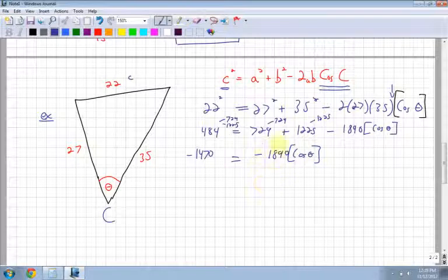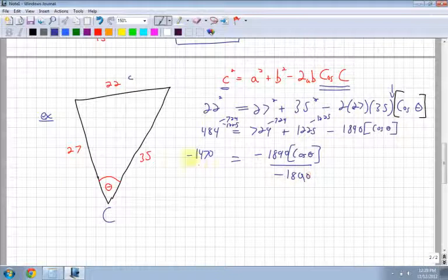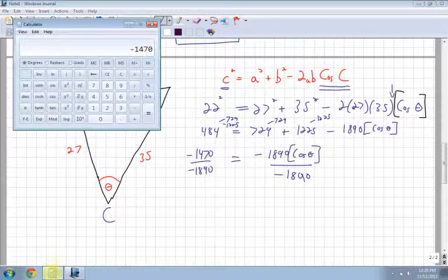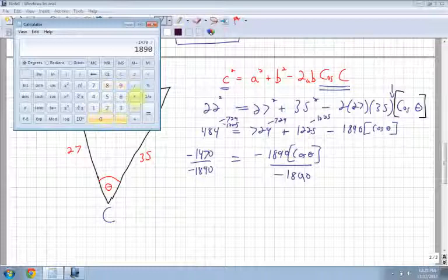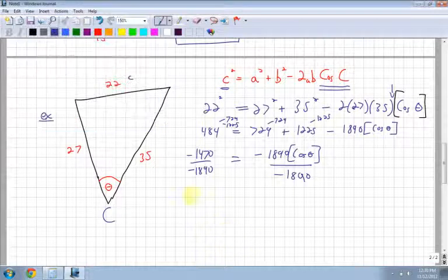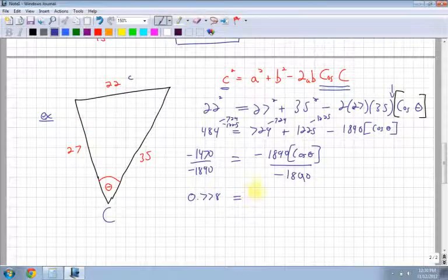Because I want you to know, how do I get rid of the negative 1890? Do I add it, subtract it? No, the opposite of multiplication is division. So I have to divide by negative 1890 on both sides. So I have negative 1470 divided by 1890, which is equal to 0.7777. Now I'm going to round on paper but remember I'm not going to round on my calculator, I'm going to leave it, and that's equal to cos theta.